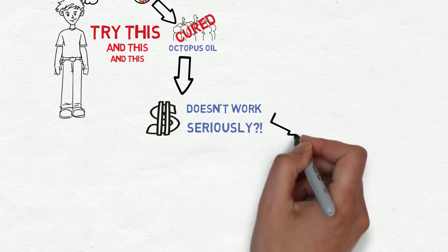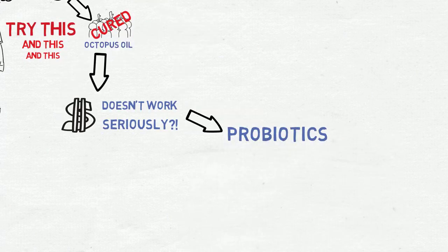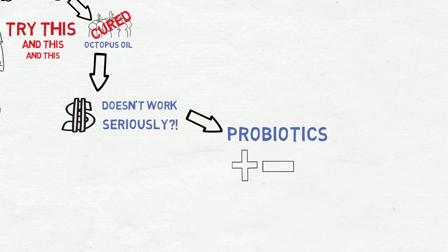One of the core supplements that has helped me and many others is probiotics. Probiotics are live bacteria and yeast that are good for your health, especially for your digestive system. For those of us with Crohn's or ulcerative colitis, usually we have an imbalance of bacteria in our guts and probiotics help fix that.